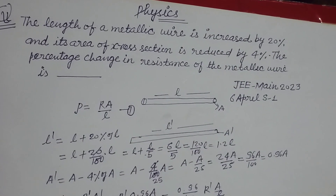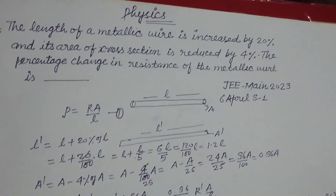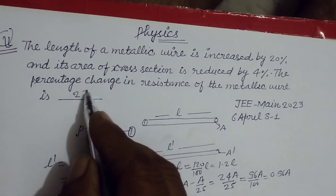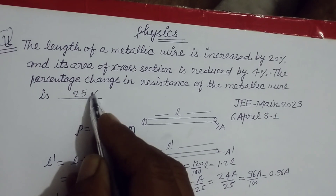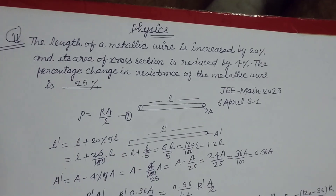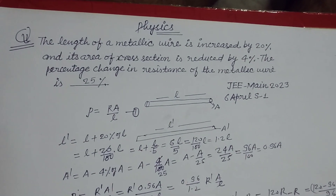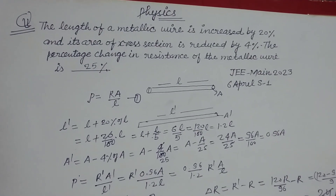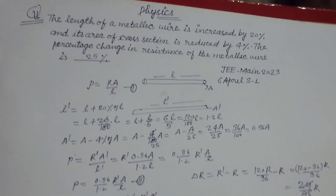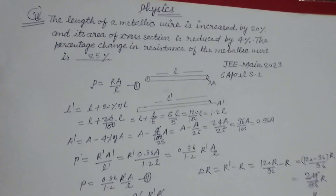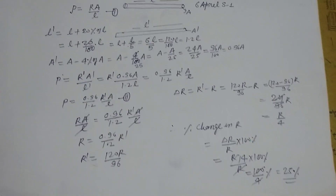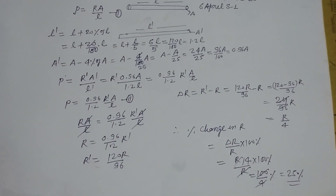So there is a 25% change in the resistance of the wire. The answer is 25 percent. Students, we have solved this question by the step-by-step method. I hope you got it. Please like the video, subscribe to the channel. Thanks for watching.